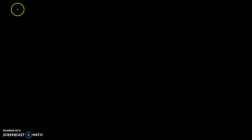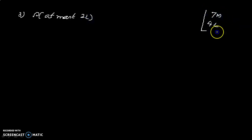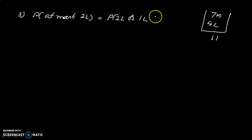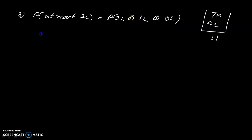Now the third part: probability of at most two ladies. At most two ladies means the committee can have zero ladies, one lady, or two ladies. So we add: probability of two ladies, plus probability of one lady, plus probability of zero ladies.